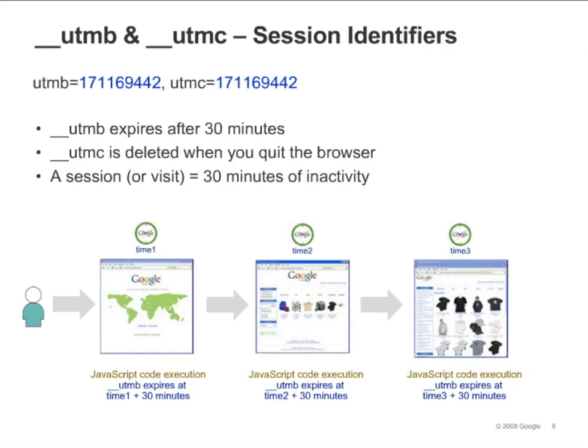The UTMB and UTMC cookies together identify a session. The content of the UTMC cookie is simply the domain hash. The content of the UTMB cookie is also the domain hash plus, if the site is using ga.js, some additional values. The key difference is that UTMB is a persistent cookie with an expiration date set 30 minutes after it is created, while UTMC is a temporary cookie that is destroyed as soon as the visitor quits the browser.